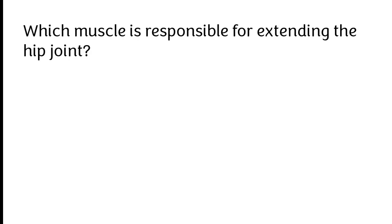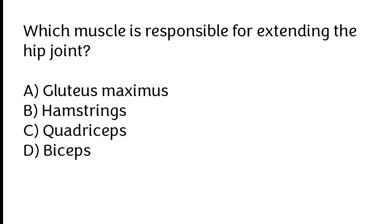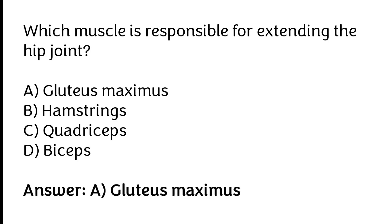Which muscle is responsible for extending the hip joint? Gluteus maximus, hamstrings, quadriceps, biceps. The correct answer is option A — the gluteus maximus is responsible for extending the hip joint.